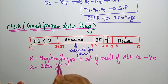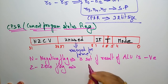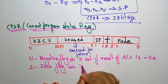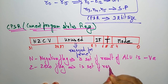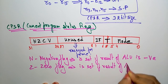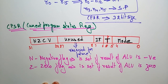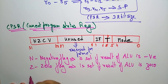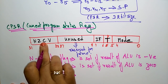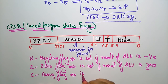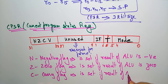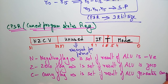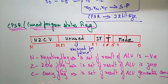Z is the Zero flag. This flag is set if the result of the ALU is zero. C is the Carry flag. This carry flag is set if the result of the ALU generates a carry — only when the result generates a carry is this flag set.